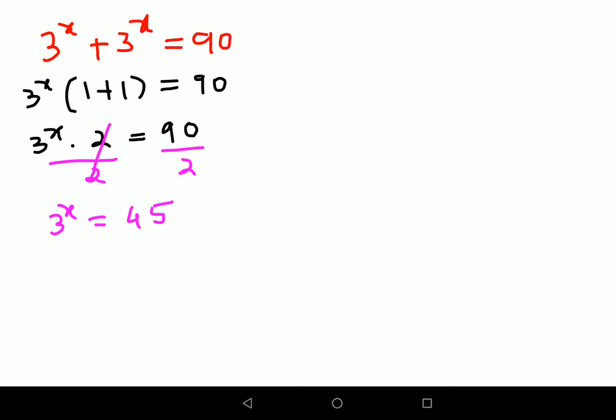Now next thing is to write this 45 in terms of 3, which can be written as 3 square into 5, right? Because 45 is nothing but 9 into 5, which is still equals to 3 raised to x.